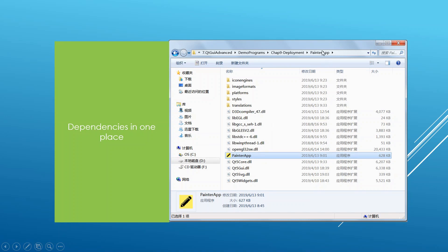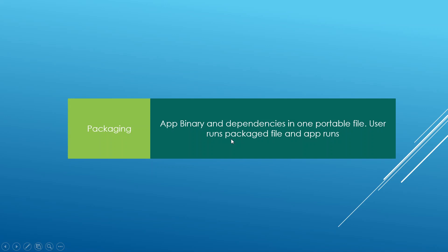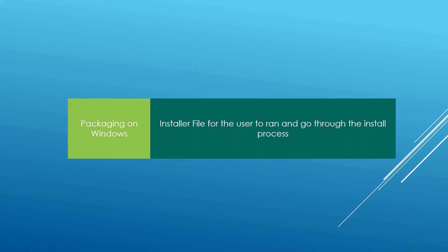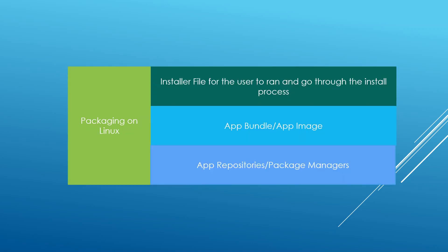That's where packaging comes in. We need to take the folder containing the files needed for our application to run and turn them into one file to send to the user. Depending on the platform, packaging works a bit differently. For Windows, we'll need to create an installer file that the user can double-click to start the install process.